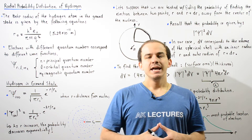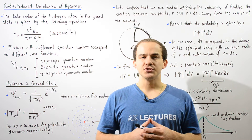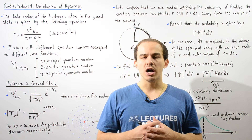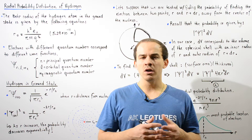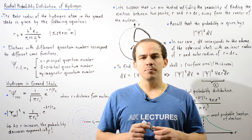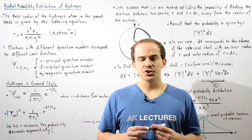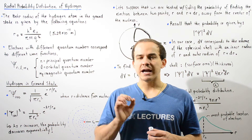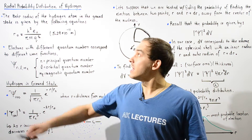In this lecture we're going to discuss a concept known as the radial probability distribution of the electron found in the ground state of the hydrogen atom. Let's begin by recalling what the Bohr radius is. According to the Bohr model of the hydrogen atom, the Bohr radius is simply the distance from the center of the nucleus to where our electron is in the ground state of that hydrogen atom.